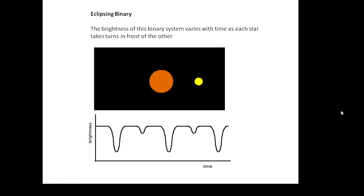If you look at their light curve, you'll see that when the brighter star goes behind, there's a bigger dip, and when the dimmer star is in front, there's a smaller dip. This is a typical light curve for an eclipsing binary.